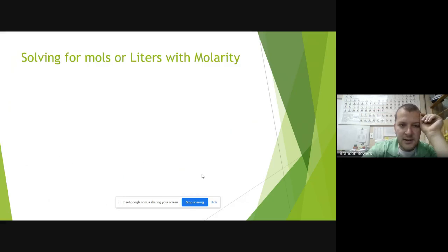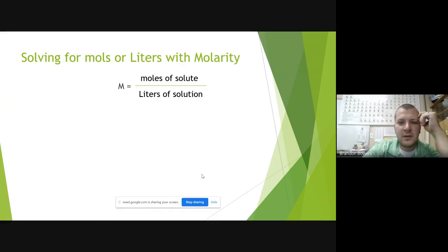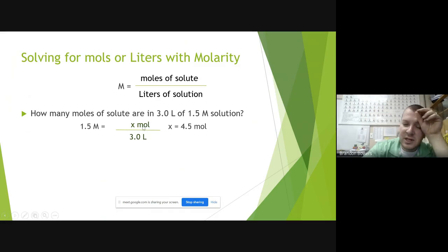How many moles are in a solute that is 3 liters and 1.5 molarity? So my units are good. So 1.5 is equal to x moles over three liters. So how do you get your answer is since three is in the denominator, you have to put three in the numerator by multiplying by three. So when you multiply by three on each side, the left turns to 4.5 and the two threes will cancel out.